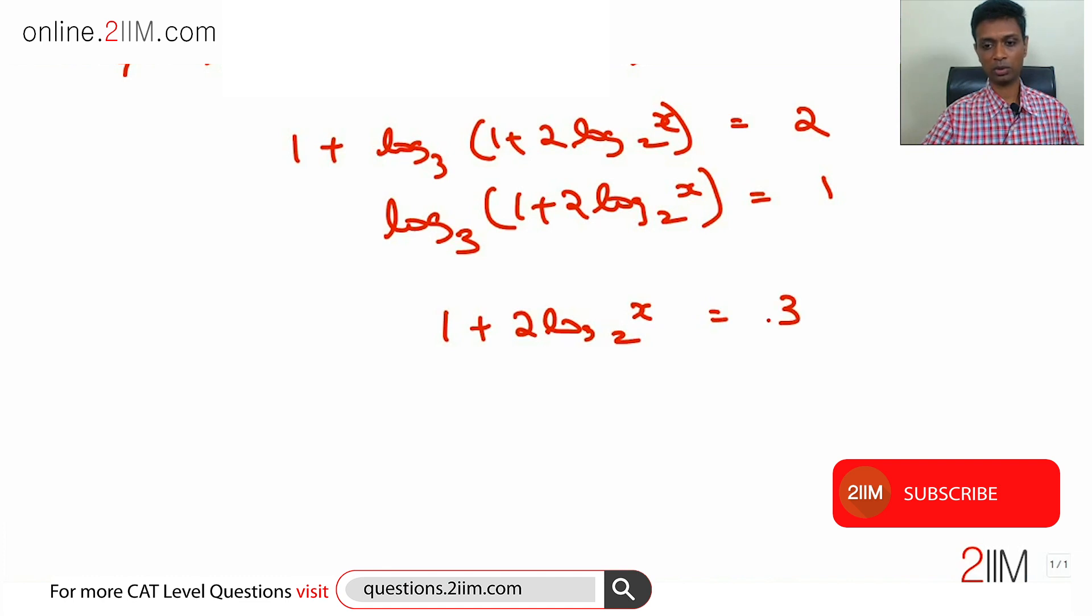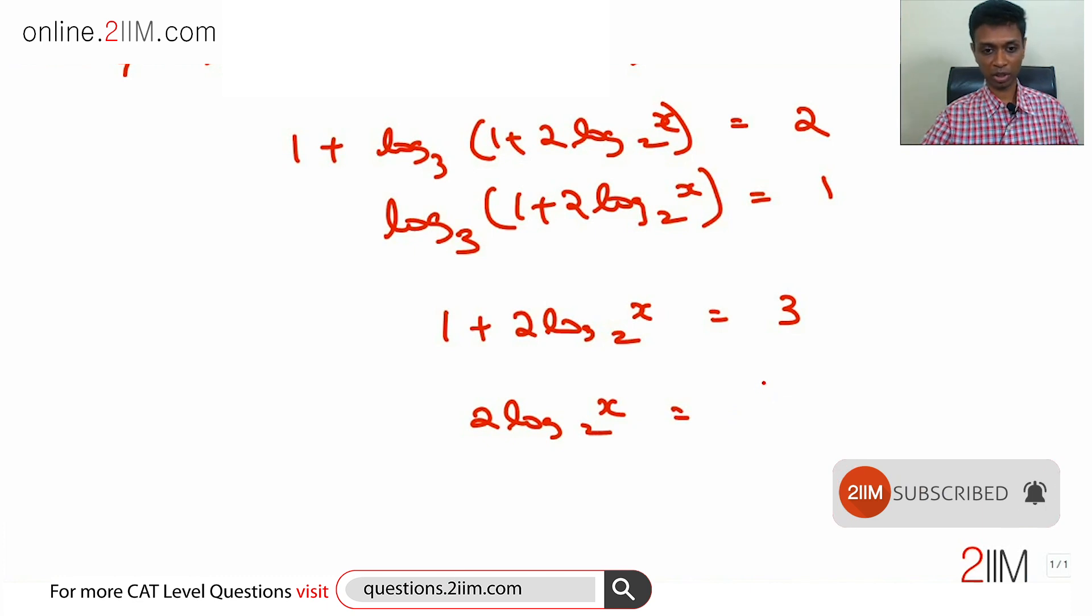2 log x to the base 2 should be equal to 3 minus 1, which is 2. Log x to the base 2 equals 1.